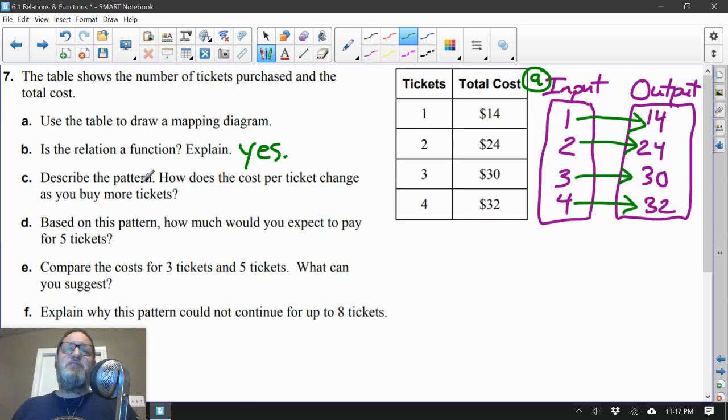Part C. Describe the pattern. How does the cost per ticket change as you buy more tickets? Well, let's see. Our inputs are increasing by 1. That describes our input. Our outputs, let's see here. This increases by 10, and then it increases by 6, and then it increases by 2. Interesting. That's changing over time. But they did ask a different question here: How does the cost per ticket change as you buy more tickets?